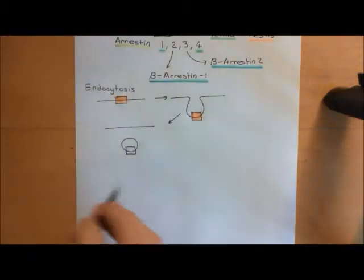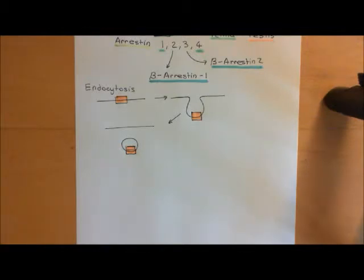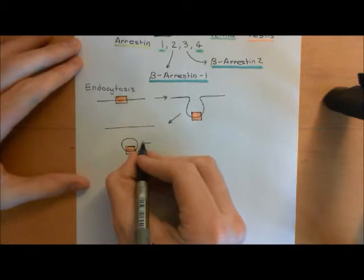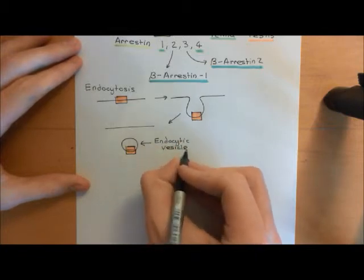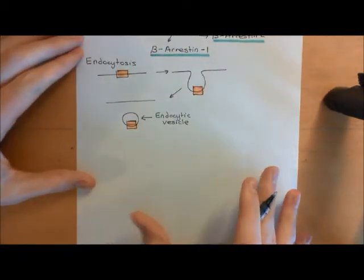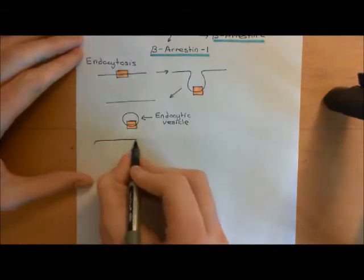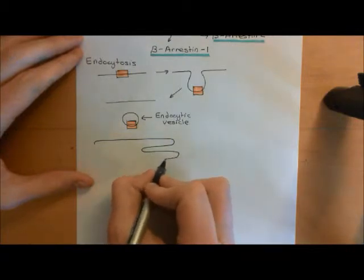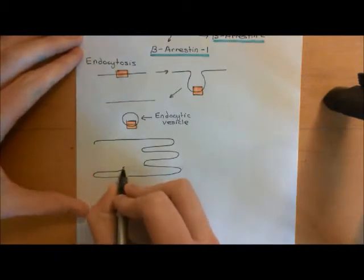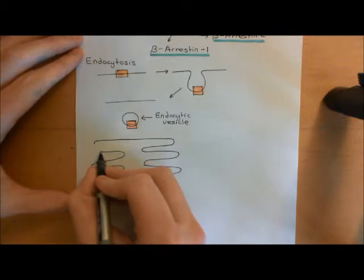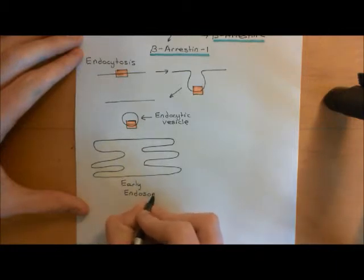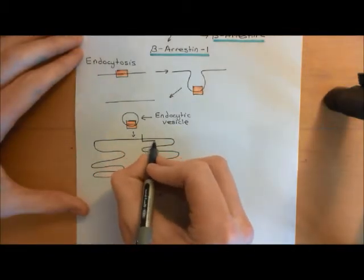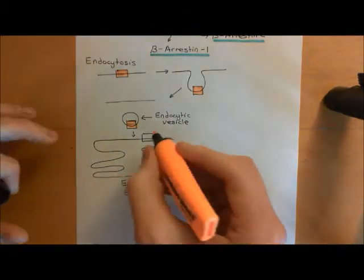The receptor has now been removed from the plasma membrane. This little sphere of cell membrane with the receptor-arrestin complex in it is called an endocytic vesicle. The endocytic vesicle takes the receptor-arrestin complex to a structure known as the early endosome — an intracellular organelle with tentacle structures from which vesicles can bud off. The endocytic vesicle coming from the plasma membrane fuses with the early endosome, putting the receptor-arrestin complex into the membrane of the early endosome.